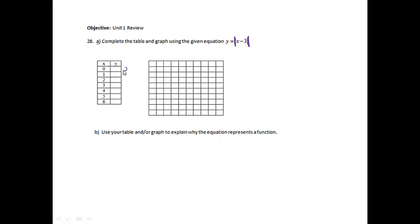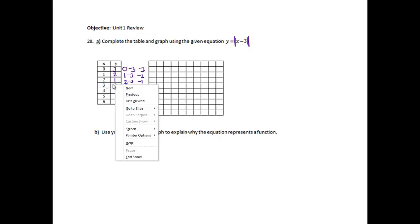So if I plug 0 in, 0 minus 3 is negative 3, but the absolute value of negative 3 is positive 3. If I plug in 1, 1 minus 3 is negative 2. The absolute value of negative 2 is 2. 2 minus 3 is negative 1. The absolute value of negative 1 is 1. If I plug 3 in, 3 minus 3 is 0. Absolute value of 0 is just 0.